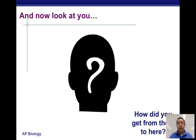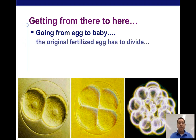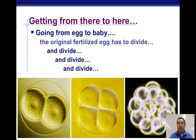Now you are what you are today. How did you get from that single cell to where you are today? The answer is division. Going from an egg to a baby takes a lot of division. That original fertilized egg has to divide and divide and divide some more, and eventually it becomes a human being.